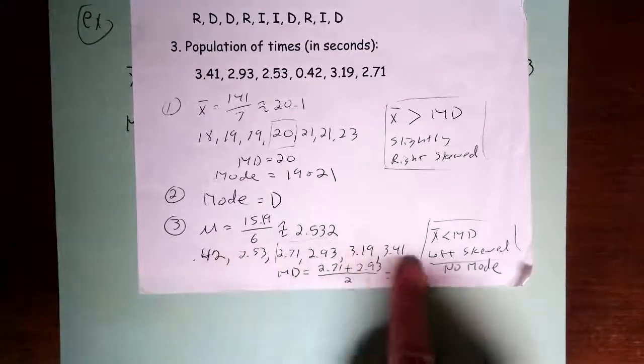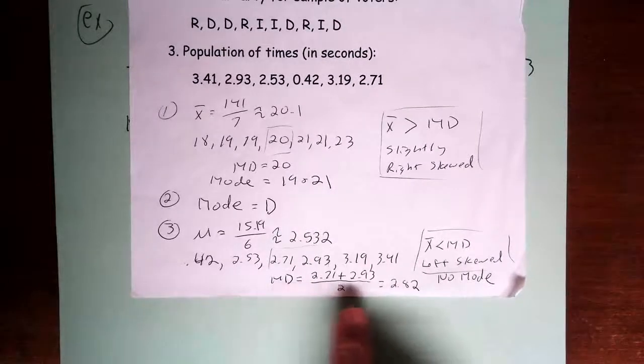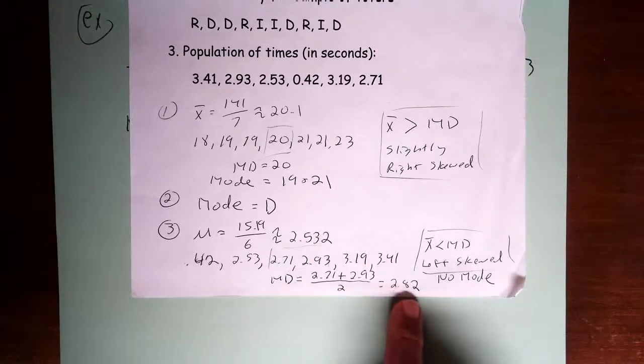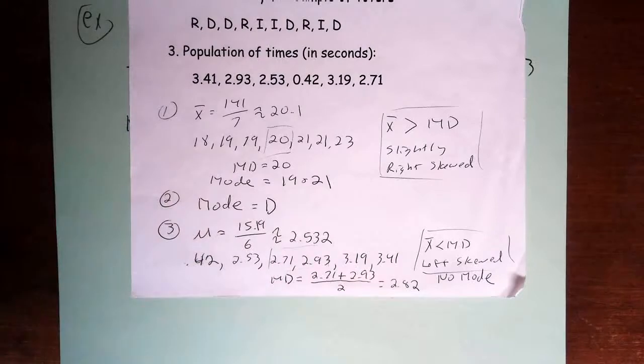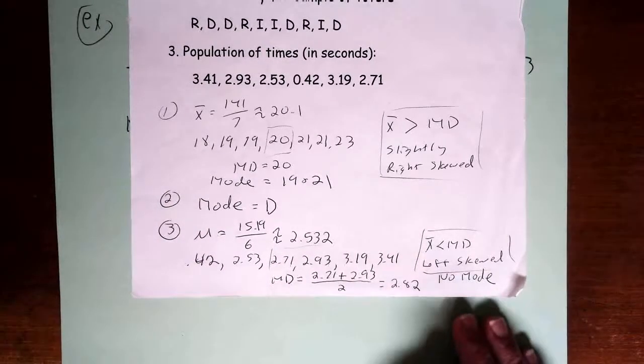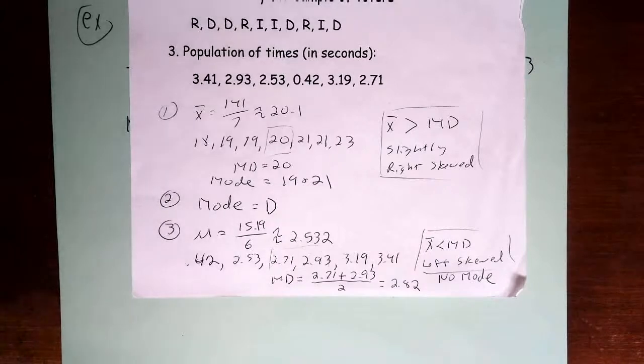Now, the median, I've got to put all the data in order, and when I do that, I get a median of 2.82, and then in this case, there is no mode, because they all occur just once.